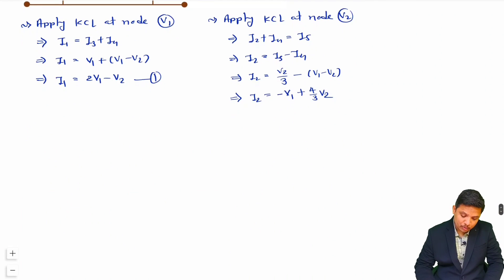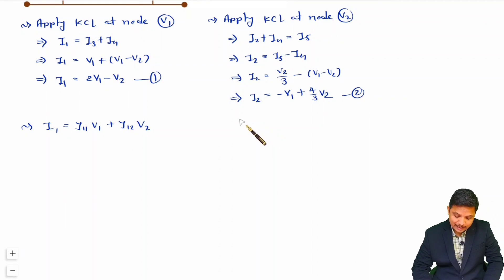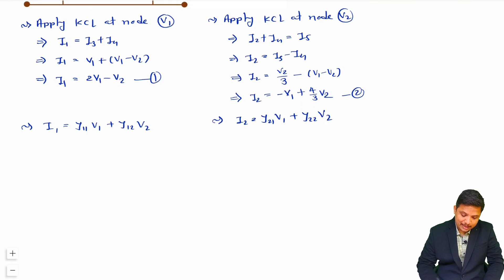Now we have two equations and can compare them with the Y parameter equations. The standard Y parameter equations are: i1 = Y11·V1 + Y12·V2, and i2 = Y21·V1 + Y22·V2. Comparing our derived equations with these, we can identify the Y matrix.